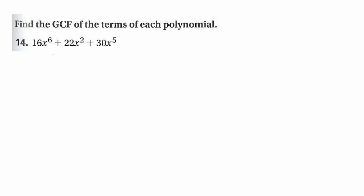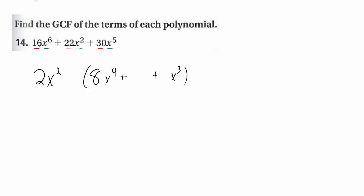The first factoring we learned is factoring out a GCF — pulling out what the numbers have in common and what the letters have in common. The highest variable we see is x squared, so we're going to pull that out of everything. If you pull two x's out, there's only three x's left on the middle term. Finding what number they all divide by — you can take this a piece at a time. They're all even, so pull out a 2. Divide 16 by 2 to get 8, 22 by 2 to get 11, and 30 by 2 to get 15. This is your answer.